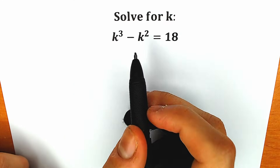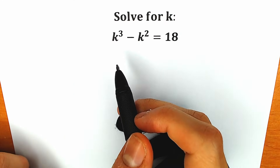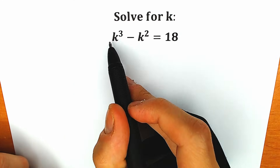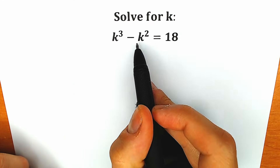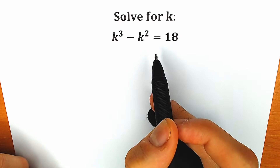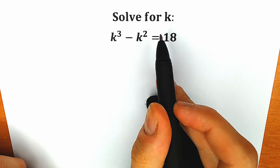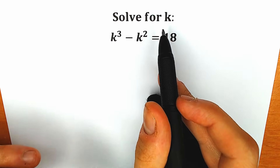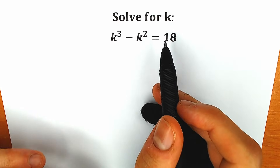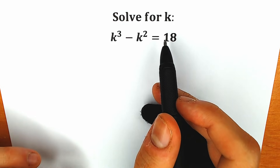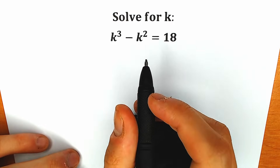Hello everyone, happy to see you here. Welcome back to my channel. Today we have a great question: k cubed minus k squared equals 18. We need to solve this equation for k. If you have your solution, your answer, you can write it in the comments below and we will check it. So right now let's start.